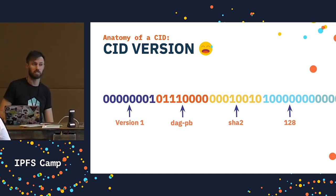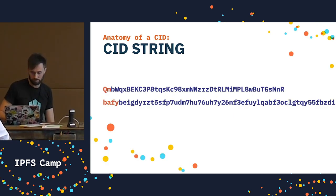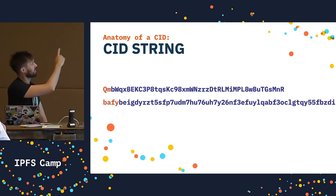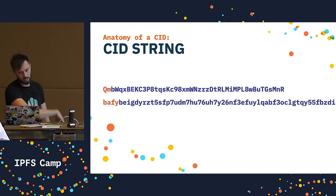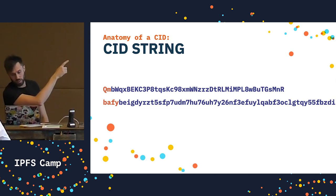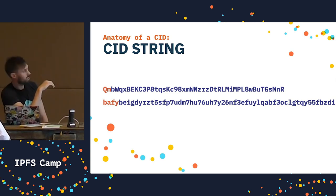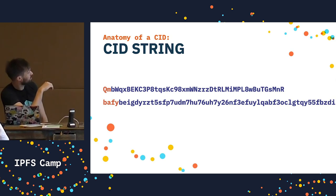If you've ever used IPFS before, you might be used to seeing CIDs like these. Version 0 is the top one, version 1 is the bottom one. Version 0 CIDs begin with 'QM' usually, while version 1 begins with 'Bafy' or 'Bafk' sometimes.